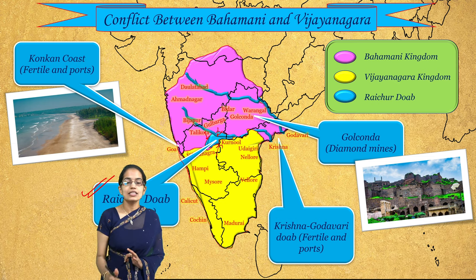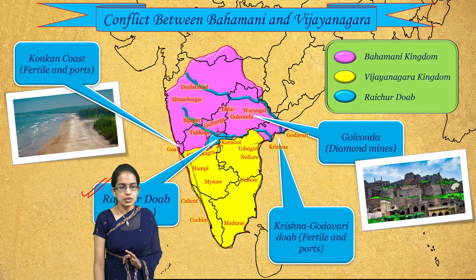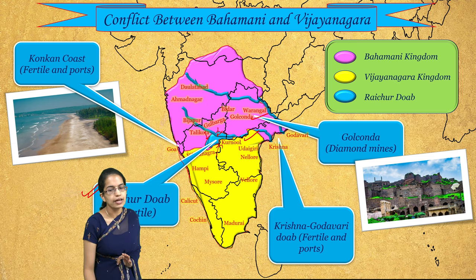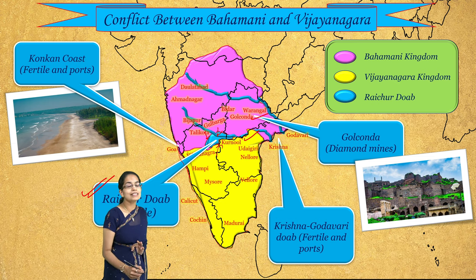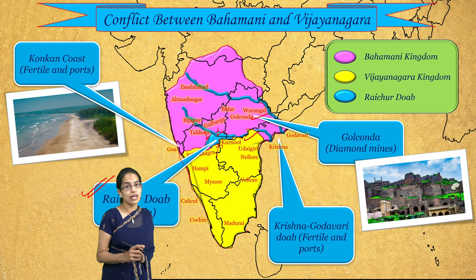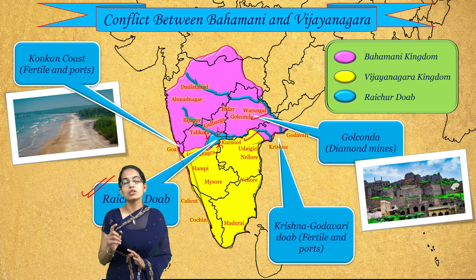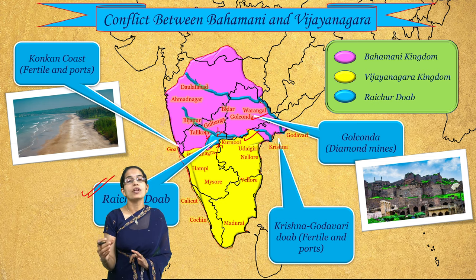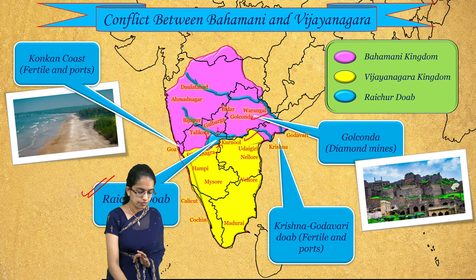The region between the Godavari and Krishna rivers was another point of contention between the Bahamani and Vijayanagar empires. Additionally, the Golconda mines, famous for diamond mining, were yet another significant source of conflict between the two states.